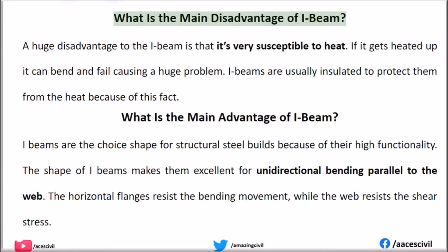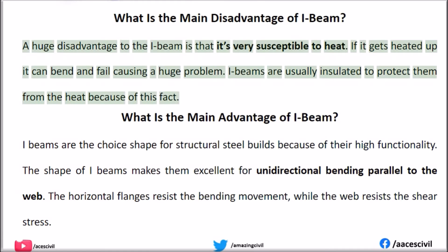What is the main disadvantage of I-beam? A huge disadvantage to the I-beam is that it's very susceptible to heat. If it gets heated up it can bend and fail, causing a huge problem. I-beams are usually insulated to protect them from the heat because of this fact.